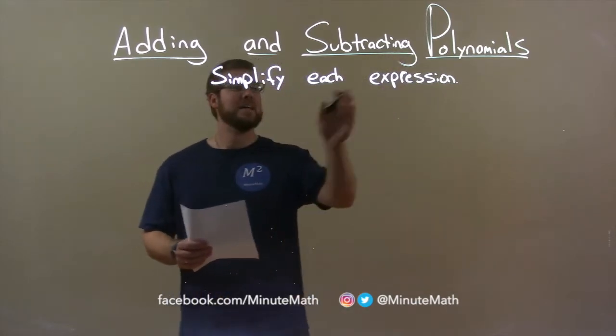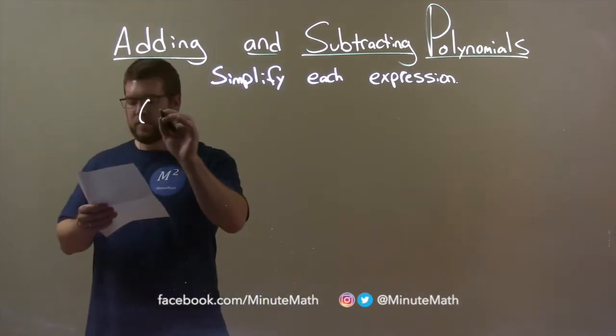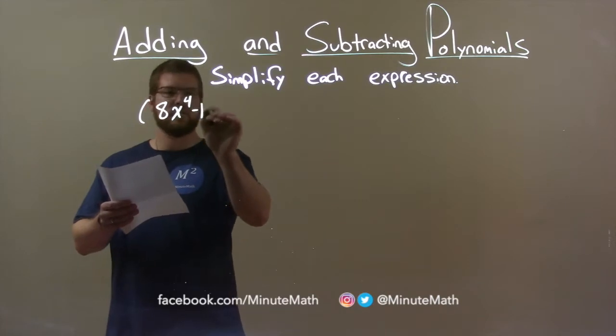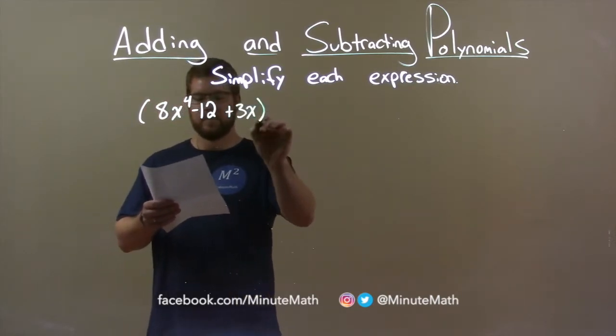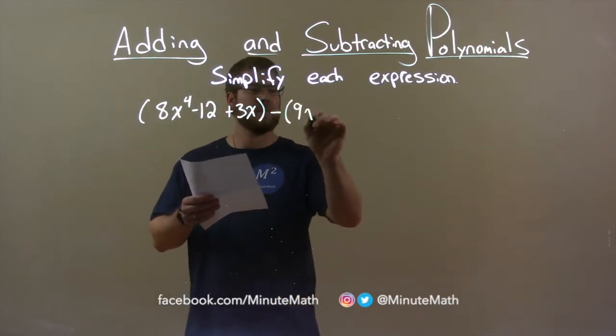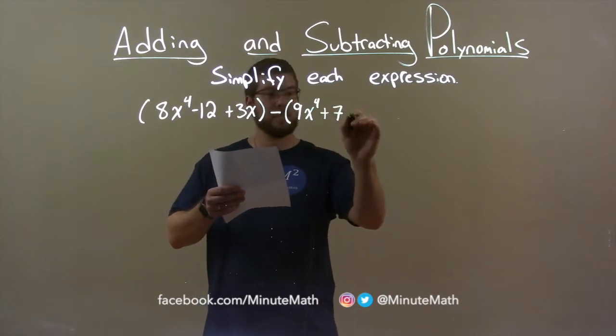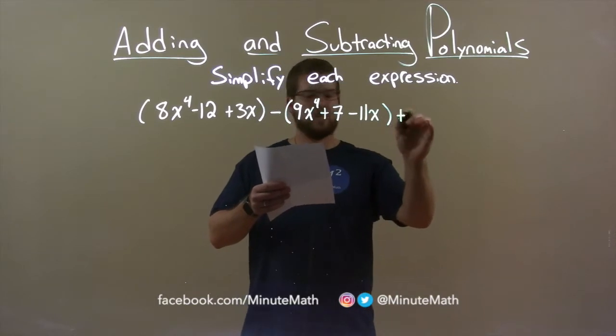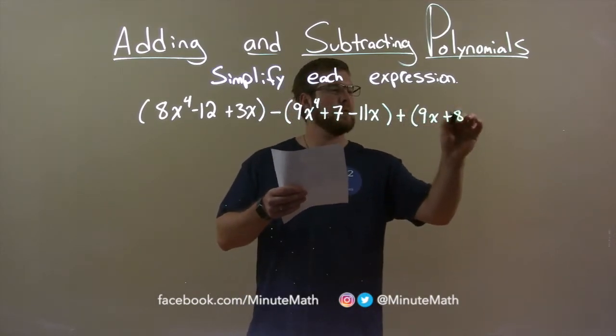We're going to simplify each expression. So if I was given this expression: (8x to the 4th minus 12 plus 3x) minus (9x to the 4th plus 7 minus 11x) plus (9x plus 8).